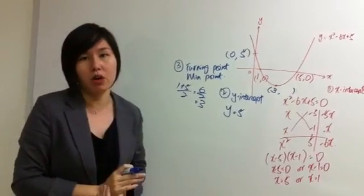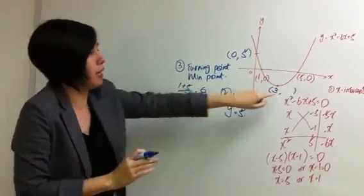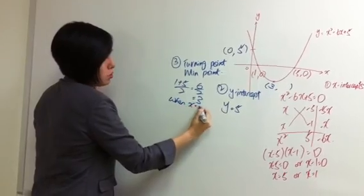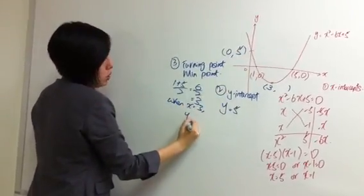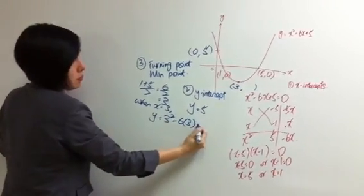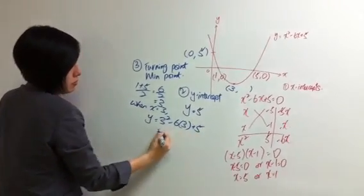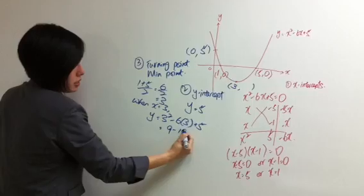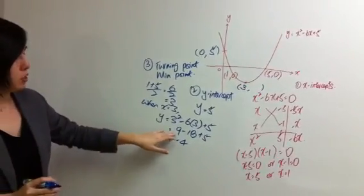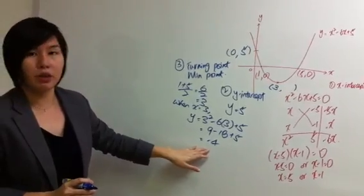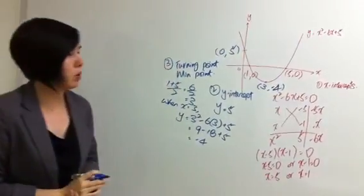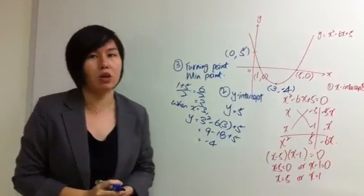That gives us the x-coordinate of the minimum point, but we also need the y-coordinate. We do a substitution: when x equals 3, substitute into the equation — y equals 3 squared minus 6 times 3 plus 5. Using a calculator, this gives minus 4. So the minimum point has coordinates (3, −4).